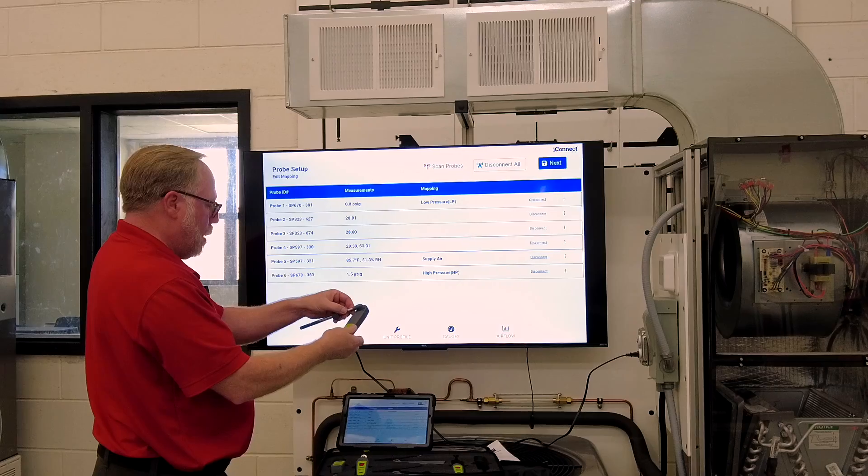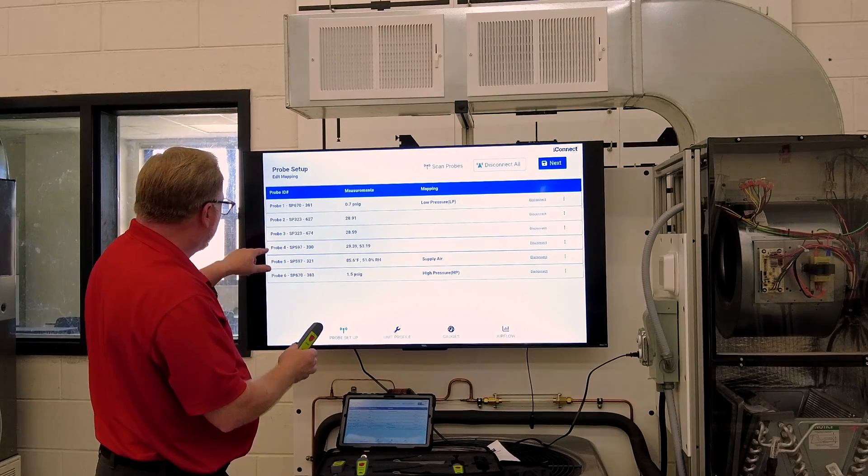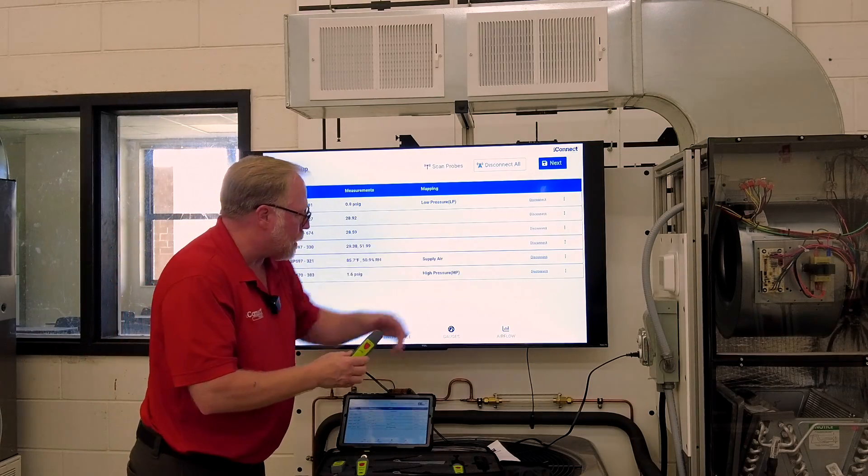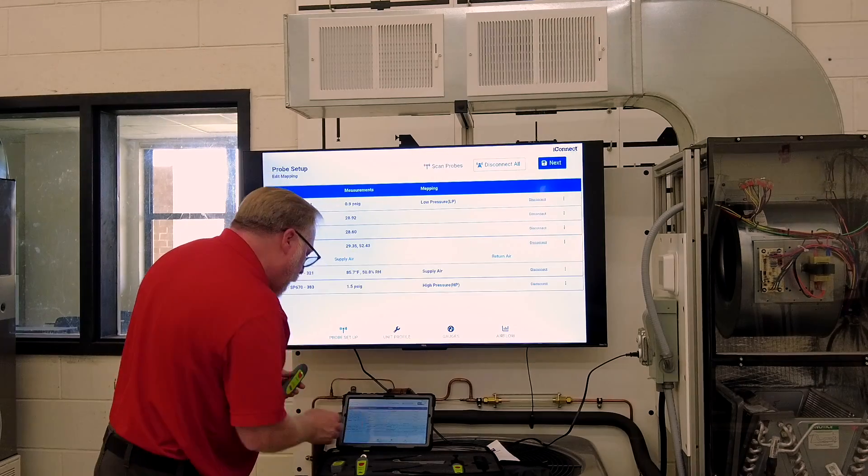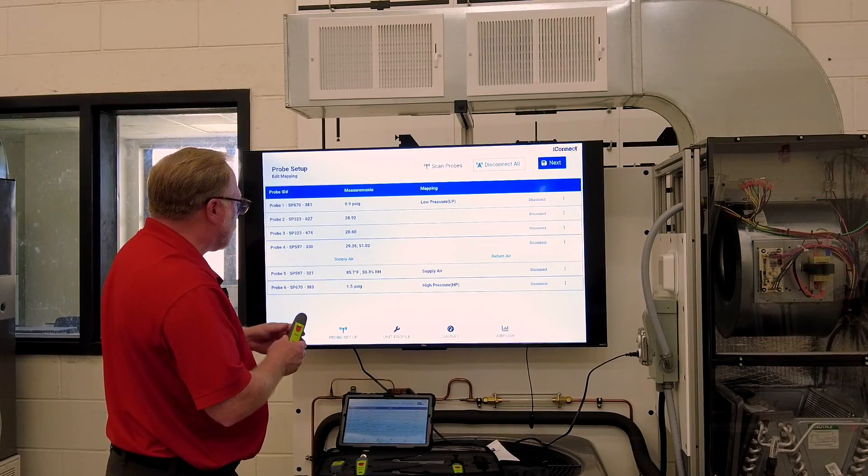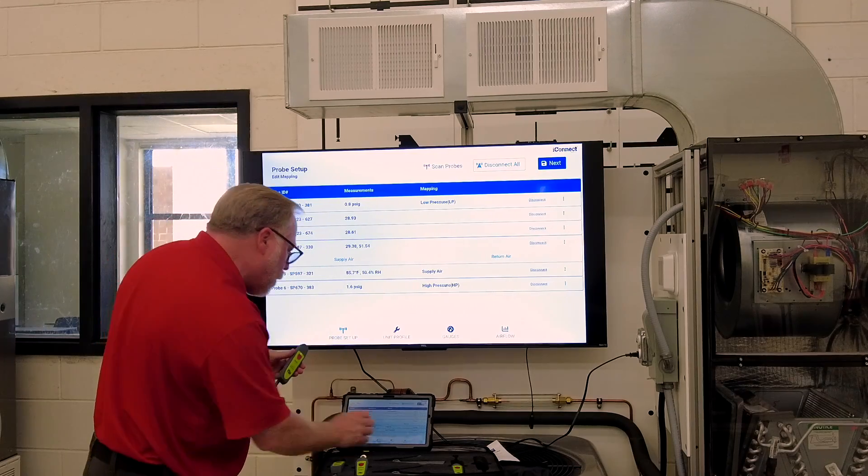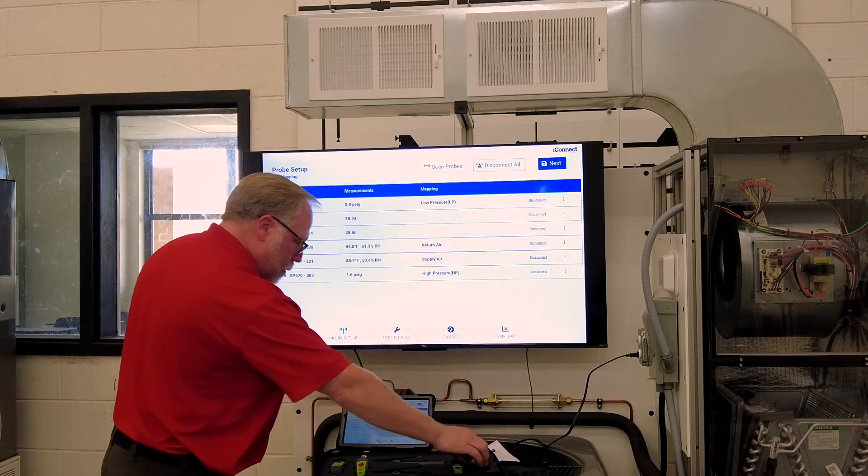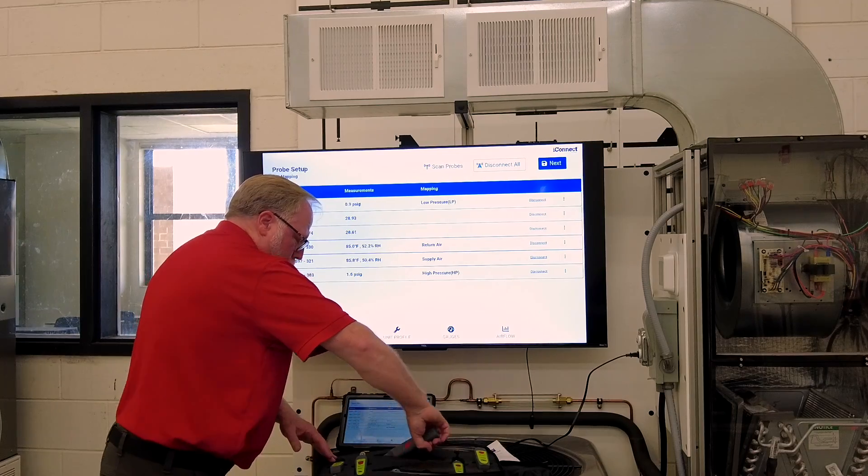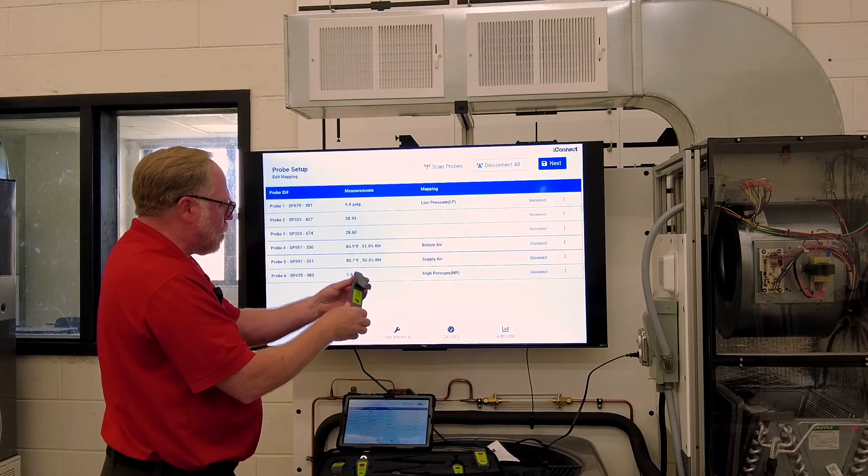I'm going to get the other one, SP597 and it is 330. And of course it's this one right here that's not been connected yet or mapped out yet. I've already got one labeled as supply air. So now I'll label this one, the 330 as return air. Okay.